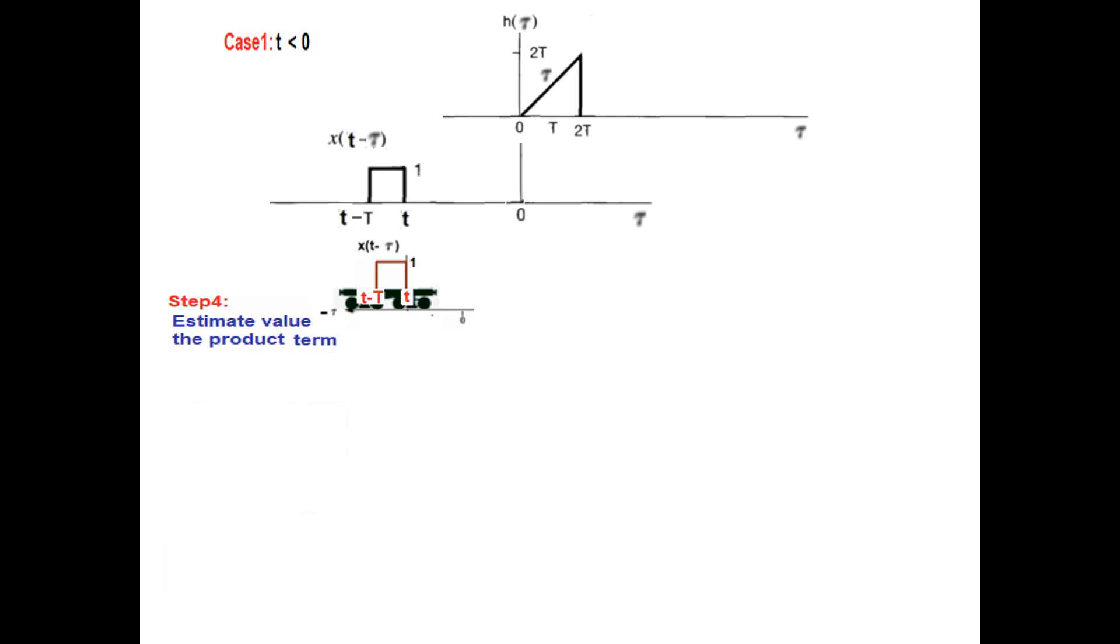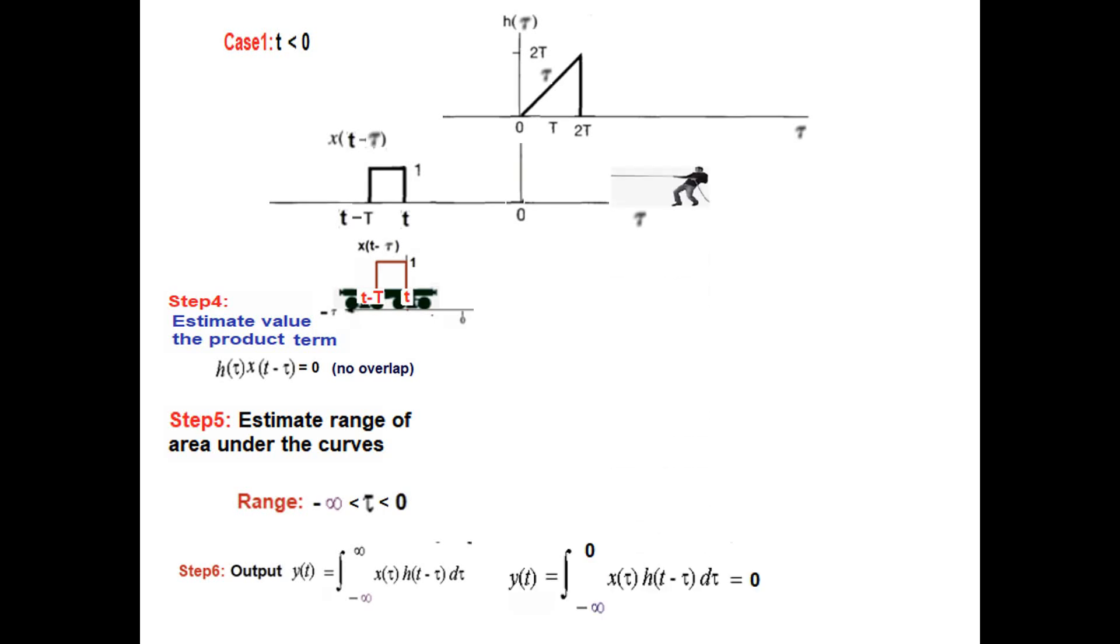Now, for T less than 0, so this T or this T less than 0, there is no overlap. So the product will be 0, no overlap. And hence, the estimated range we can say is minus infinity to T or 0. I am not very sure what range we will call it. Anyway, it is minus infinity to 0. And then the output from the equation, the output will be 0.